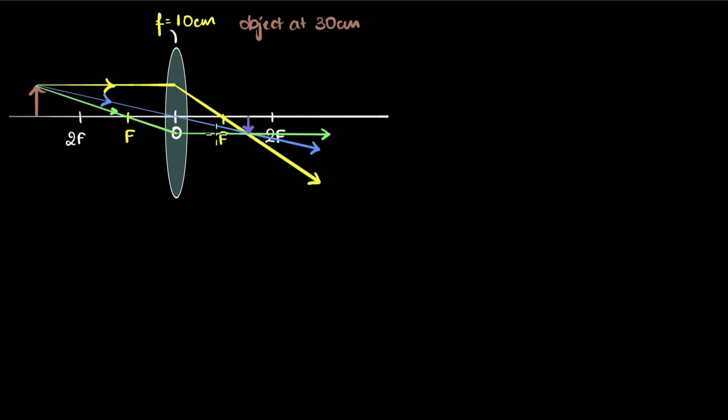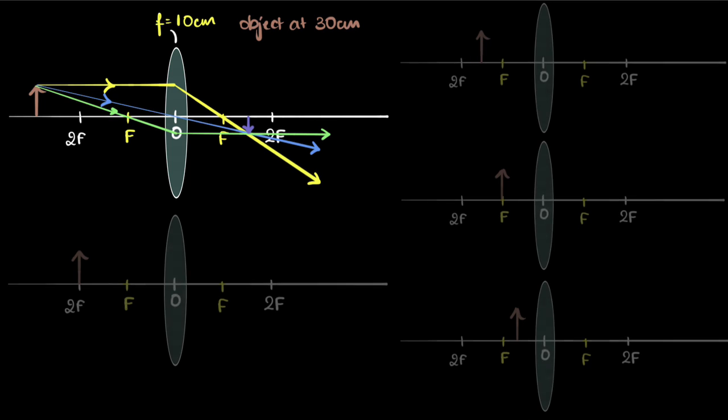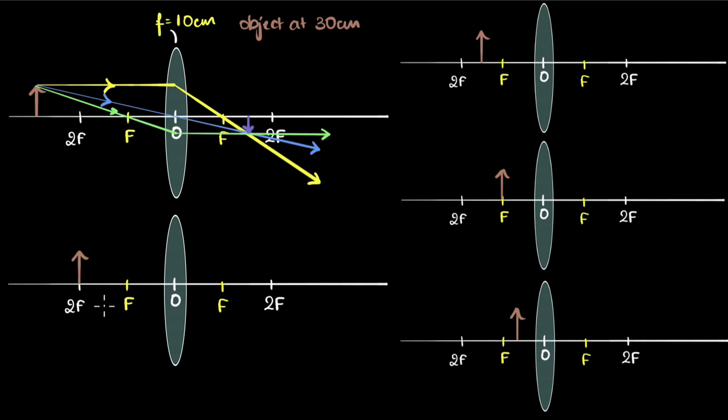The point is you don't have to remember any of this. You can always draw these ray diagrams and you can figure it out. So let's practice the remaining cases. Here are some other cases and all the cases have the object at different locations. Why don't you pause the video and see if you can draw a couple of ray diagrams and identify where the image is going to be.